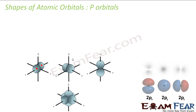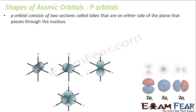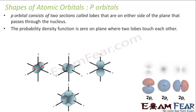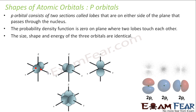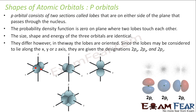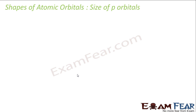For P orbitals, the orbital has two lobes — there are two lobes on either side of the plane, and the probability density is zero on the plane where the two lobes touch each other. The size, shape, and energy of the three P orbitals are the same, but the orientation is different. Px, Py, and Pz are three different ways of noting this.